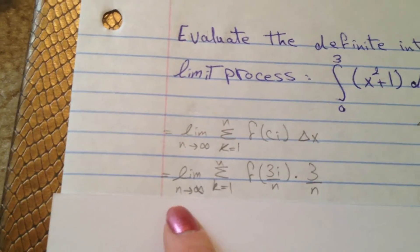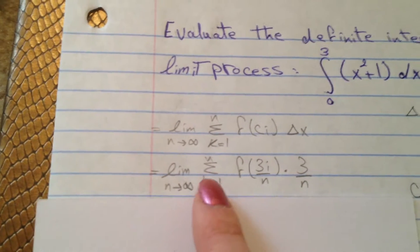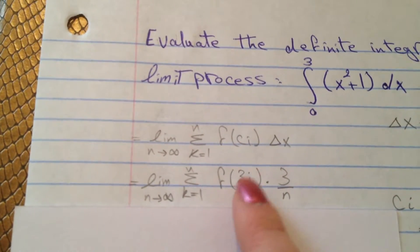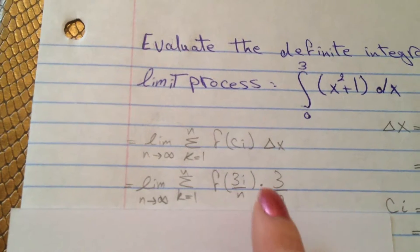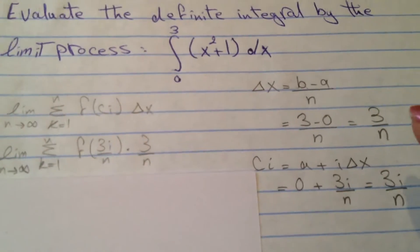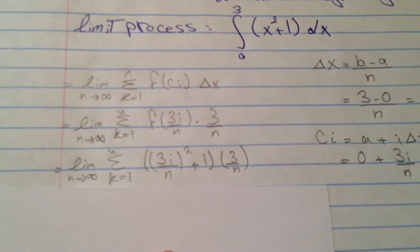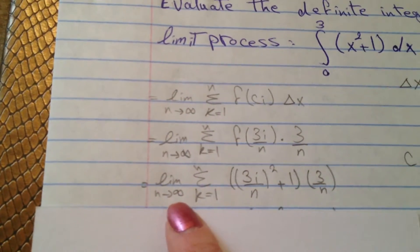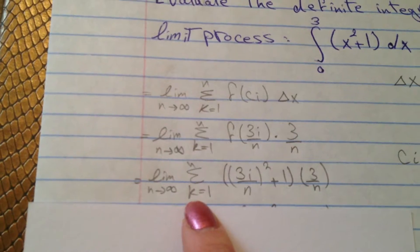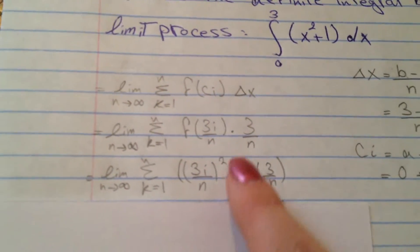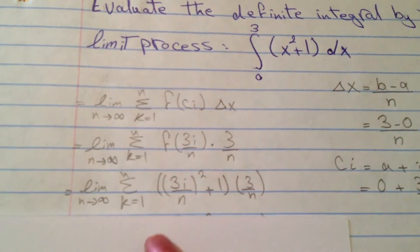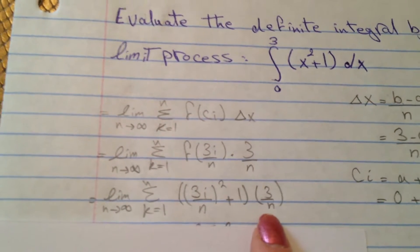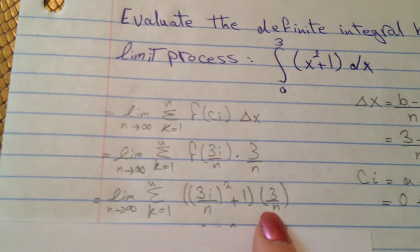So limit as n goes to infinity, sum from k equals 1 to n, of f(3i/n) times 3/n — that we got from our solution. Now we have to plug in to our x squared plus 1. So now we have (3i/n) squared plus 1, and for delta x we have 3 over n.